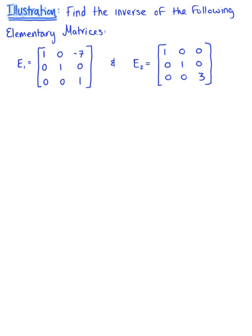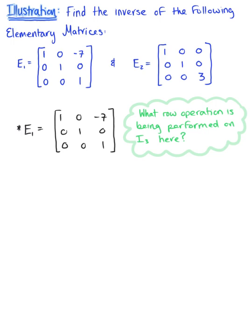Here is an illustration to help us understand the inverse of elementary matrices. We are given two elementary matrices and asked to find the inverse of each. Starting with the first elementary matrix E sub 1, we have the 3 by 3 matrix: 1, 0, negative 7 in row one; 0, 1, 0 in row two; and 0, 0, 1 in row three. We can see that it is multiplying the third row by negative 7 and adding it to the first row of the identity matrix.